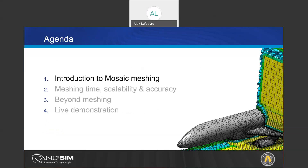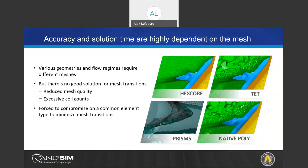Let's get started with an introduction to mosaic meshing. There are quite a few different ways to mesh using different elements — hex core, tet, and polys — and all of those elements have different strengths and weaknesses. For instance, typically a hex core is very good for meshing the free stream, while a poly would be better at capturing different gradients and curvatures, etc.